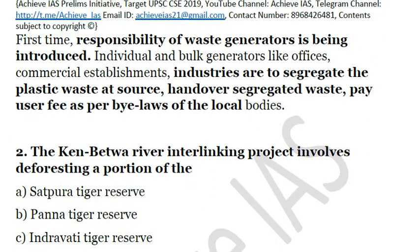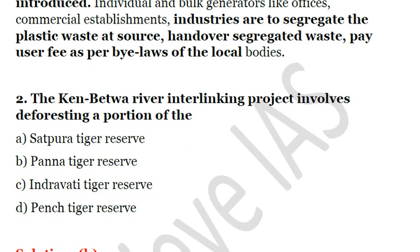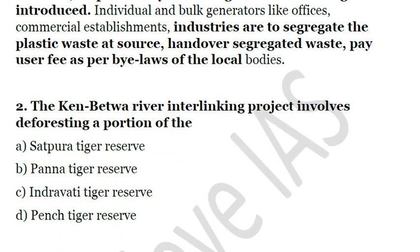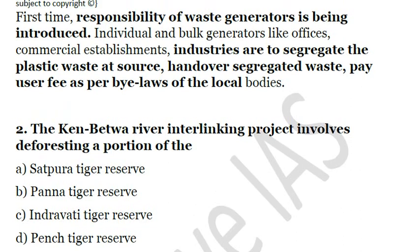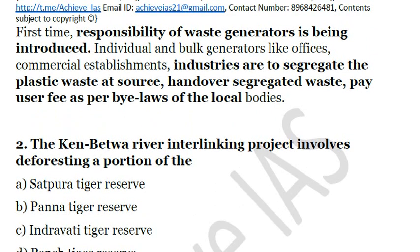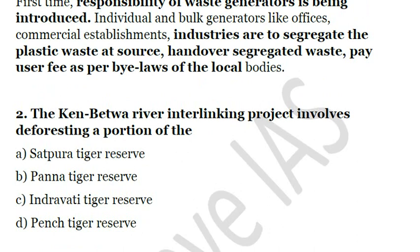The second question: the Ken-Betwa river interlinking project involves deforesting a portion of which tiger reserve? A. Satpura Tiger Reserve, B. Panna Tiger Reserve, C. Indravati Tiger Reserve, D. Pench Tiger Reserve. The answer is Panna Tiger Reserve. The Ken-Betwa river interlinking project is basically in UP and also includes the area of Madhya Pradesh. It aims to interlink these two rivers, but in the process there will be deforesting of approximately 10% of the Panna Tiger Reserve area. The answer is B.